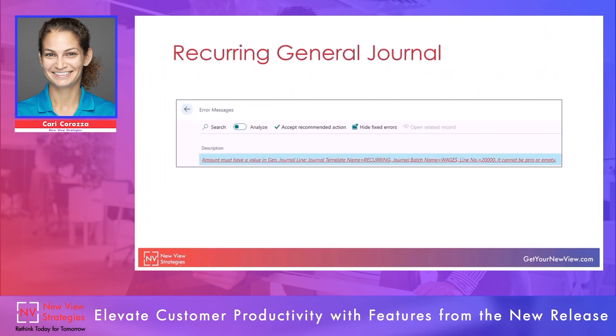This is just a screenshot of an error message that you might have seen previously. On the recurring general journal, if you had a line that had a zero dollar amount, you were not able to post it. You'd get an error message saying that the amount must have a value in whatever that line is — it cannot be zero or empty. Previously you might just delete that line and then add it back for the next time you need to post that journal.